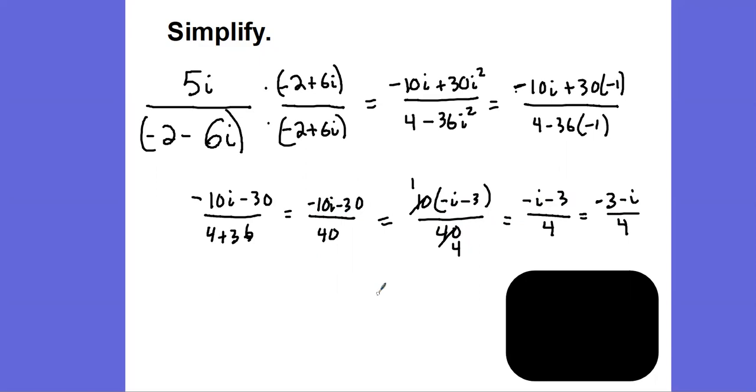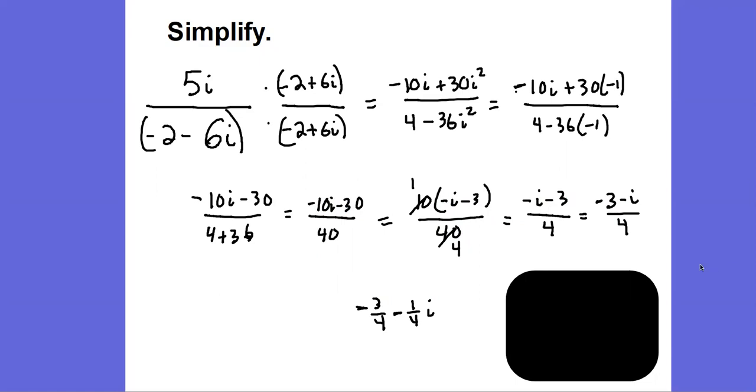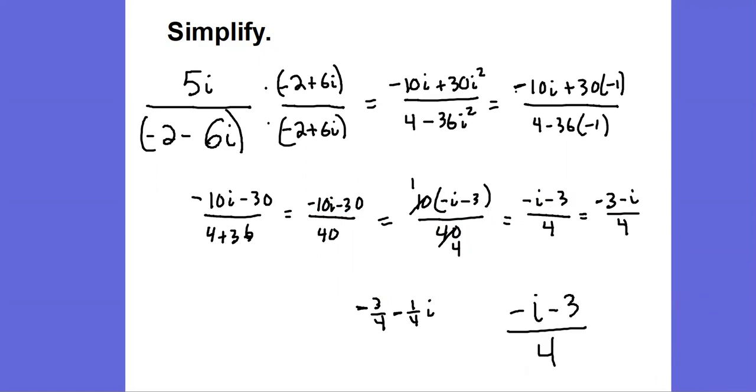If I want to write it as a complex number in standard form with a plus bi, I can write this as negative 3 fourths minus 1 fourth i. So all those answers are equivalent there. And just to show my answer, notice that I stopped there with the negative i minus 3 over 4.